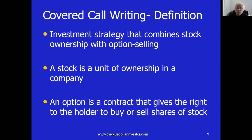A stock is a unit of ownership in a company, so when we buy a share of stock, we are actually owners in that particular company. An option is a contract — a contract that gives the buyer of that option the right but not the obligation to buy or sell shares. In the case of covered call writing, we are selling a call option, selling the right to some unknown person to buy our shares from us at a price that we determine, by a date that we determine.